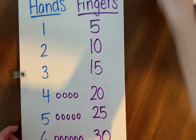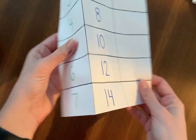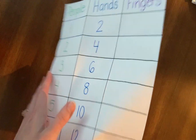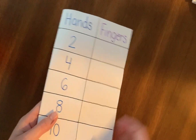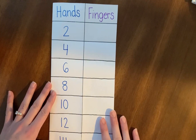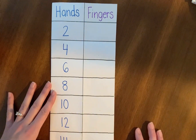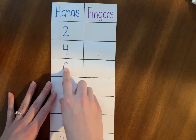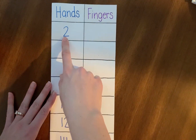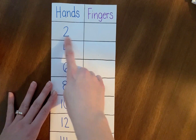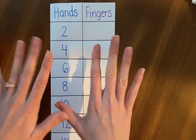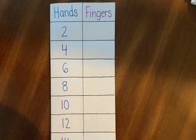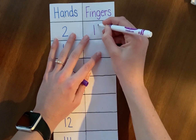Now we already made a chart with people and hands — one person has two hands. Let's look at this chart and this time we'll say how many fingers go with these hands. This chart is a little different because we're starting with two hands. Two hands has 10 fingers, so I'll write the number 10 here.